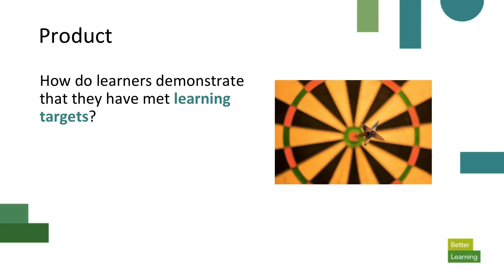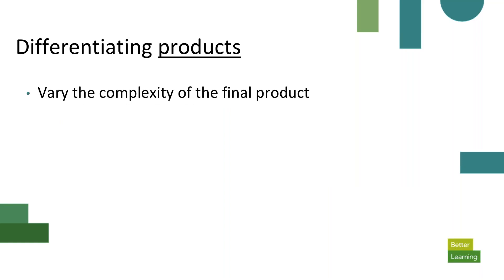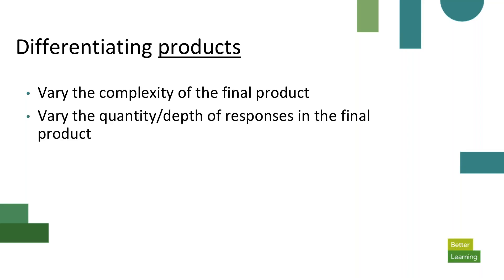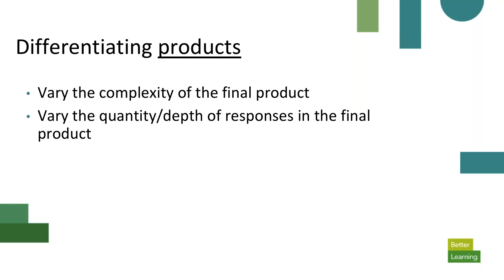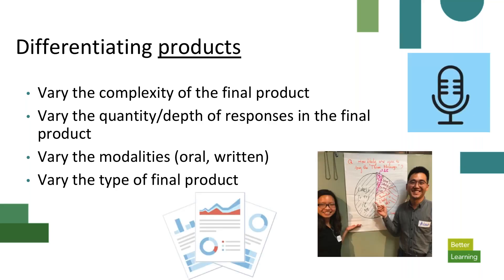Finally, we want to think about our products — how do learners demonstrate they've been learning the targets for our lesson? We could vary the complexity of the final product itself, the quantity or depth of responses. The final product could be an essay, a quiz, a PowerPoint, or any kind of final outcome showing student learning. We could vary the modalities, whether oral or written, and then vary the type of final product — some students might write a report, some might create a graph or poster, some might make a podcast, and some might record a video.